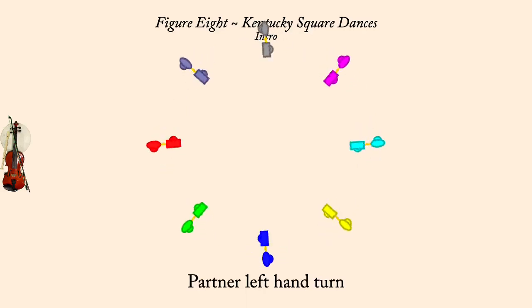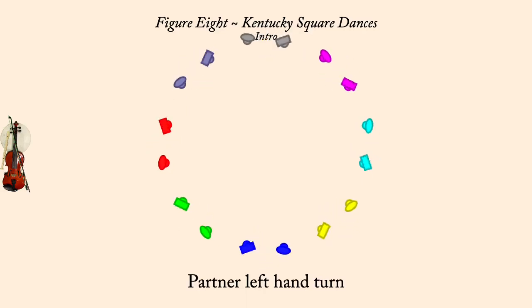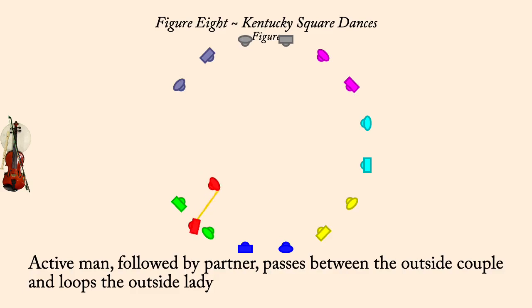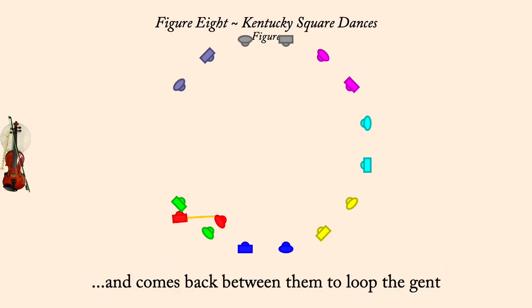First gent drags partner right. First man, followed by partner, between outside couple, loop around the lady. Back between the couple, to loop the gent.